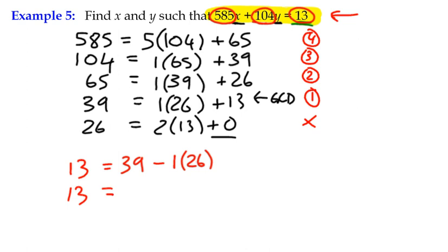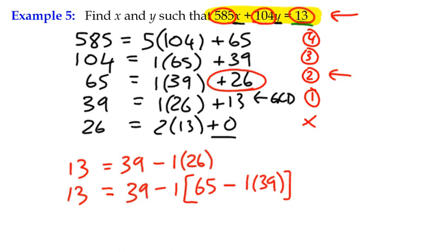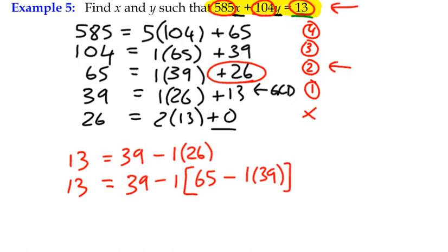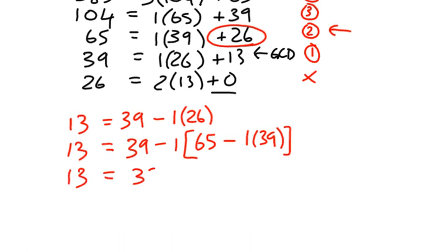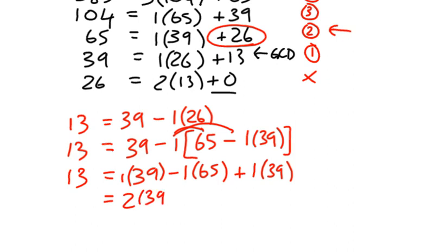So, I'm going to write 13 is equal to... Well, equation 2 is going to give me 26. So, I'm going to keep 39 there, and I'm going to substitute in for 26, which is just going to be 65 minus 1 lot of 39. Always multiply out and simplify before you take on the next equation. So, if I simplify this, it's going to be 39 minus 1 lot of 65, and again, we've got negative 1 lot of negative 1, so it's going to be positive 1 lot of 39. I've already got 1 lot of 39 there, so I've got 2 lots of 39 minus 1 lot of 65.